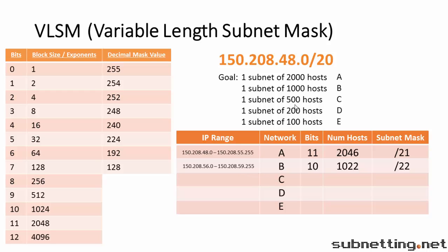Our third network needs 500 hosts. 512 means we need 9 bits. The number of hosts will be 510. The subnet mask will be 32 minus 9, or slash 23. Calculating the block size in the third octet, counting from 16 to 23, our block size is 2. Our network starts at 60.0. The next network starts at .62.0, so this one goes to .61.255.